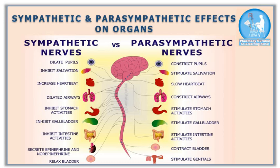In sympathetic response, your heartbeat is faster to pump out more blood to peripheral tissues and body parts to work faster, whereas in parasympathetic response, your heartbeat is slower. Due to sympathetic effects, bronchial tubes and airways are dilated to receive more oxygen and supply it to the body. Whereas due to parasympathetic effects, the airways are constricted.